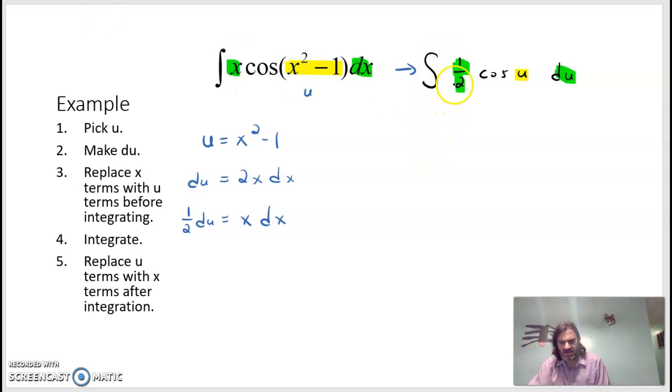So integrate. The 1 half is a coefficient, so it'll stay there. So we're on step 4, integrate. Integration of cosine is sine. So it'll be sine of u and then plus C. So 1 half sine of u plus C. But we've got to go back to whatever u was. So we'll have 1 half sine of x squared minus 1 plus C. And now we are back in terms of x.